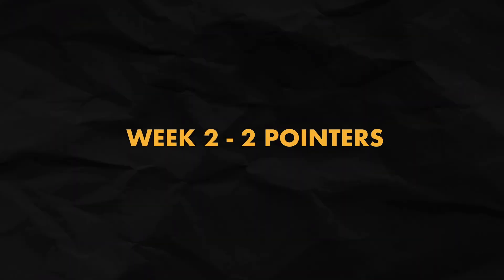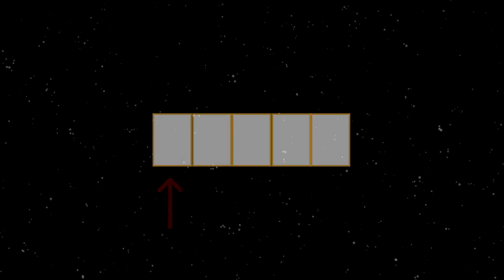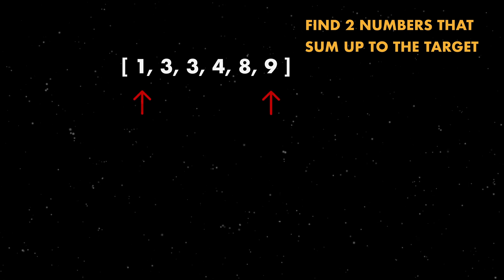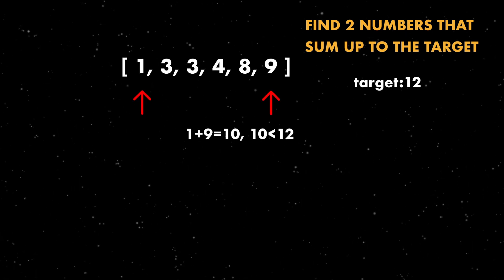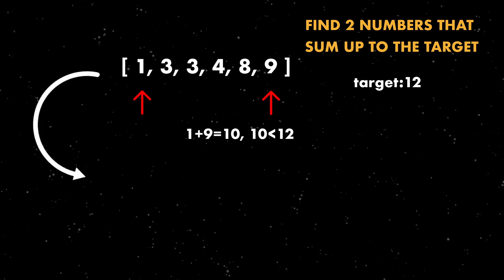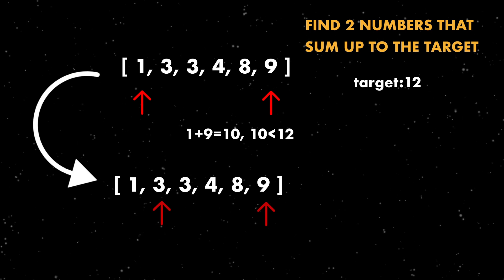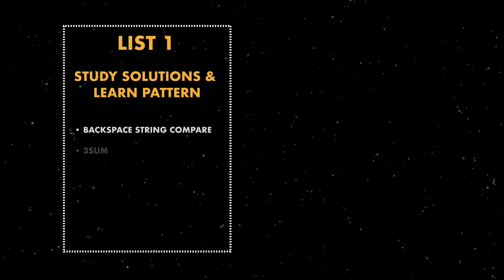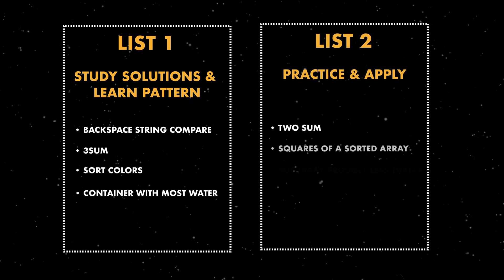Moving to week two, two-pointers is similar to sliding window in that there are two pointers, but here the pointers typically move towards each other until you hit a certain condition. For example, with a sorted array where you want to find if two numbers sum to a value, you move one pointer depending on the current sum. There are other cases like fast or slow-moving pointers, and sometimes you'll want to sort the array or store previously iterated values — these are tricks you'll learn as you study solutions and practice.